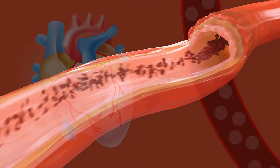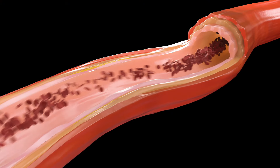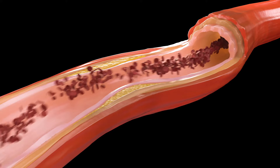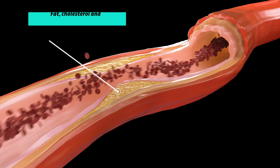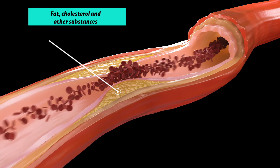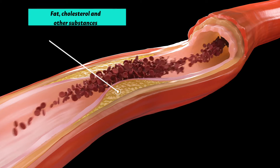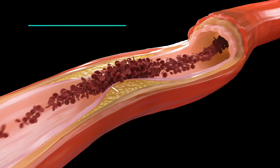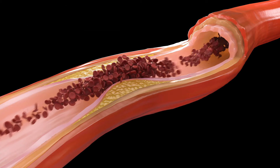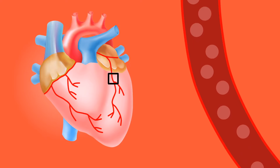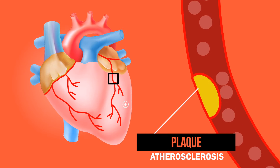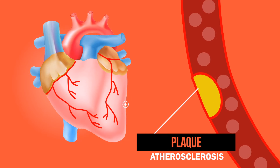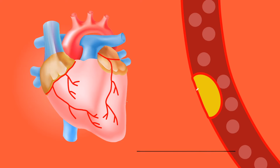Coronary artery disease is the main cause of heart attack. The blockage of arteries is usually due to the buildup of fat, cholesterol and other substances. The fatty cholesterol-containing deposits are called plaques, and the process of plaque buildup is called atherosclerosis.